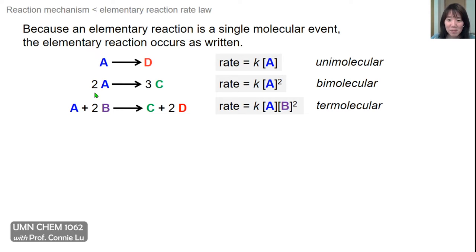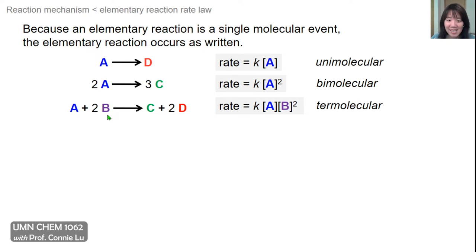In the second example, two molecules of A react in this elementary reaction — a bimolecular reaction. The rate law would then show two concentration terms: the concentration of A squared. In the third reaction, this would be a termolecular example, where one A and two B molecules react to form products. The rate law would then have three concentration terms: the concentration of A times the concentration of B squared.